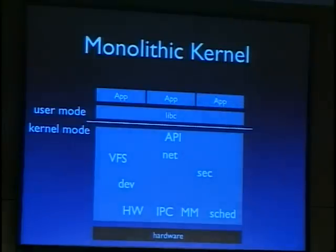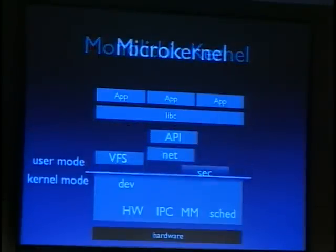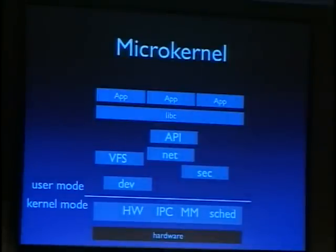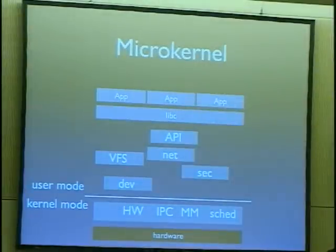On a microkernel, the kernel-user boundary is moved down so only the really necessary parts run in kernel mode: the scheduler, memory manager, inter-process communication, and low-level hardware access. Components like the file system or networking are each implemented in their own address spaces in user mode. Microkernels have the advantage that a crash in a driver or file system logic does not have to bring down the whole system — the faulty component can just be restarted like a user application. Similarly, malicious code in a network driver doesn't have full control over the system.